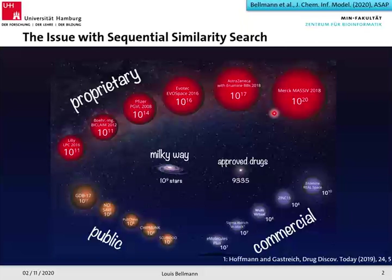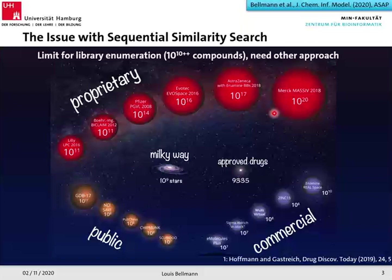These spaces you cannot enumerate anymore, so you cannot do a classic fingerprint search because the sequential approach just does not work. There is a limit to this classic sequential search approach — maybe at 10^10 or 10^11 compounds — but somewhere there's this limit, and if you want to go beyond that you need another approach. This is what I want to show you today.